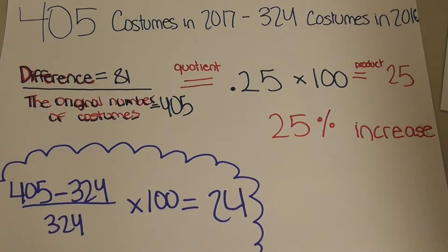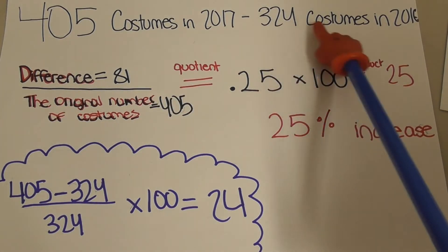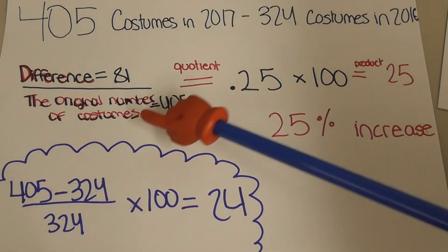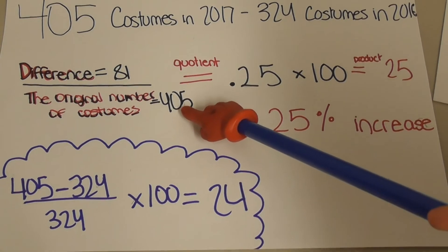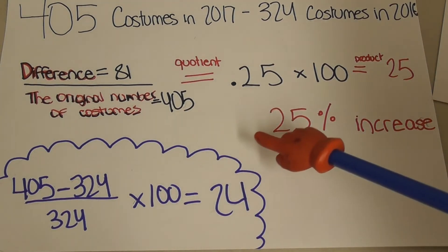You must find the difference between the number of students wearing Halloween costumes from 2016 and 2017. The difference of 405 and 324 is 81. Now you must divide the difference by the original number of Halloween costumes. 81 divided by 324 equals 0.25.